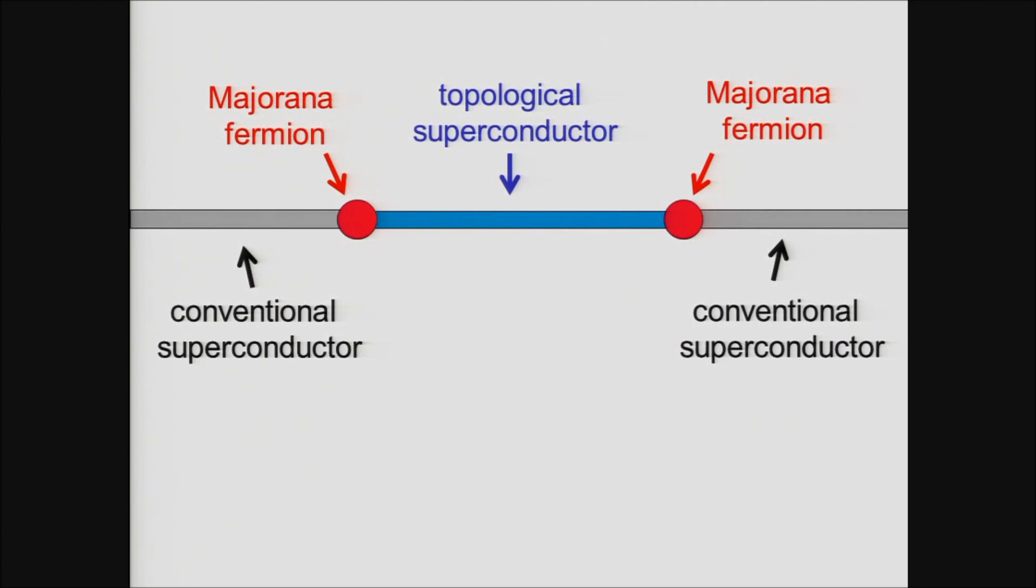And if we allow an electron to be absorbed by the topological superconductor, it sort of dissolves away and disappears, and thereby changes the state of these Majorana fermions. So, in this way, there are really two different states. One with the extra electron added, and one without.